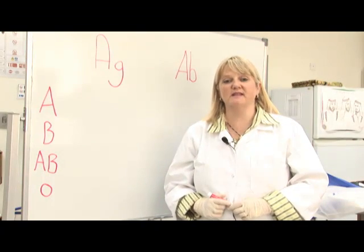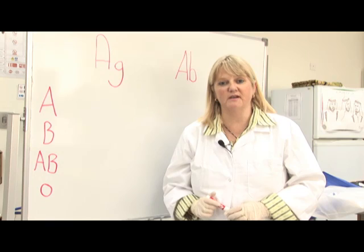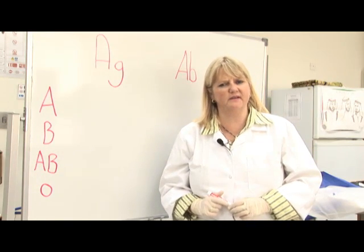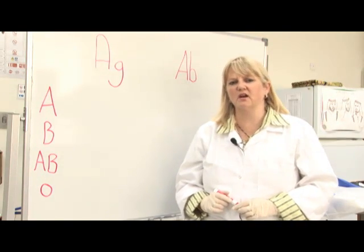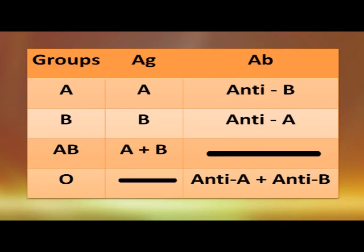When an antigen is present on the red blood cells, the corresponding antibody is absent from the serum. Let's take a closer look at Landsteiner's law. In a group A individual, the antigen on the red blood cell would be an A antigen. The antibody present in the serum would be anti-B.